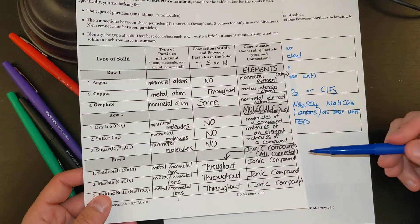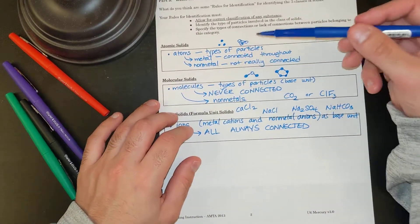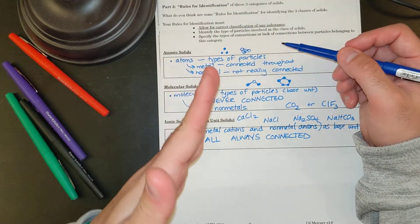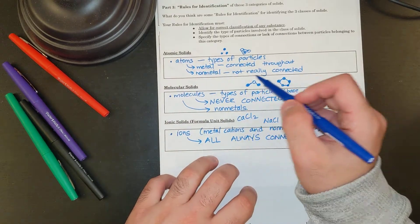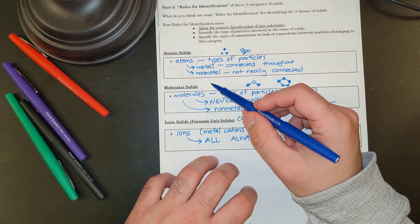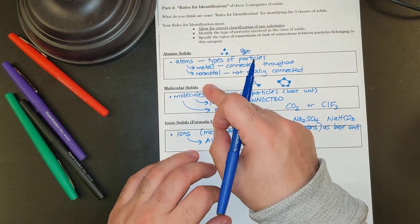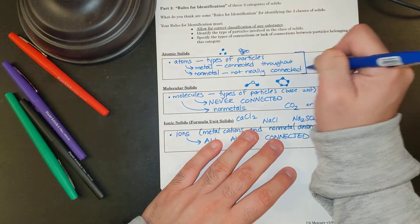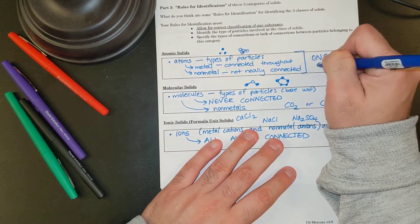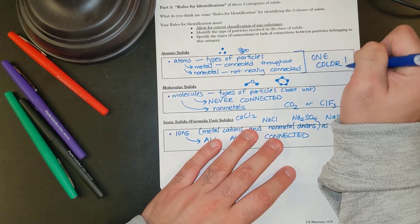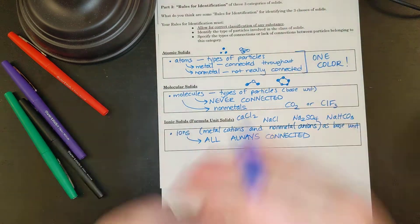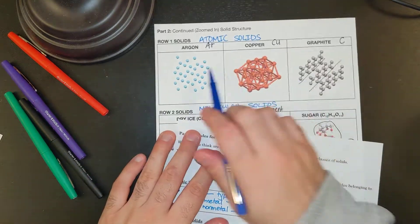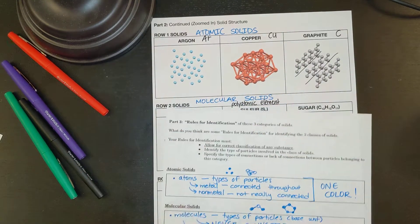And those are our three generalizations, those are our rules. So if I want to identify an atomic solid, the base particle is going to be an atom, may or may not be connected, probably if it's a metal it's connected completely. Non-metal would be not really connected. Let's also help specify and say one color. So if I'm looking at a structure, and it's an atomic solid, I should only have one color. Look at all my atomic solids, they only have one color.